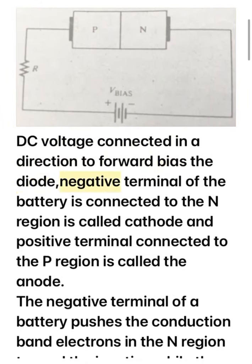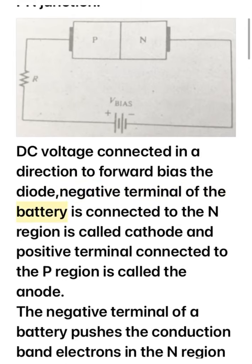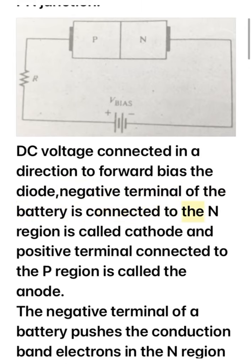The negative terminal of the battery is connected to the N region, which is called the cathode, and the positive terminal is connected to the P region, which is called the anode.